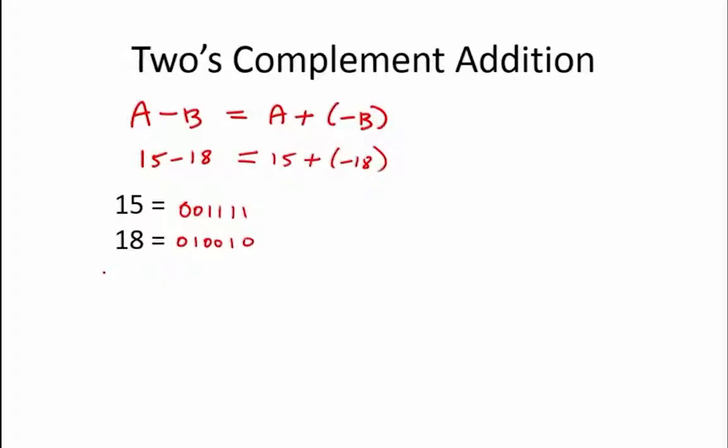To convert 18 to minus 18, we flip all the bits and add 1. This results in 101110, which is equal to minus 18.